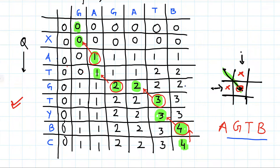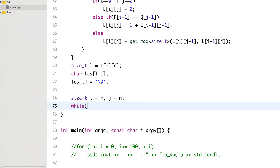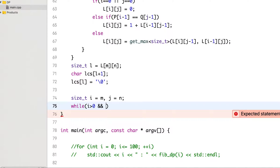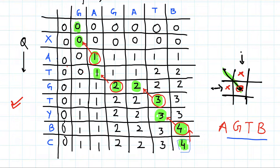Since we are backtracking from index m, n position, I will initialize our variables i and j to m and n. Then we keep doing minus minus. The while loop condition is: while i is greater than 0 and j is greater than 0. If any one of these becomes 0 then we stop — like when we reached the boundary, i became 0 so we stopped. We could also stop after printing the fourth character because we know beforehand the length of our LCS is 4.